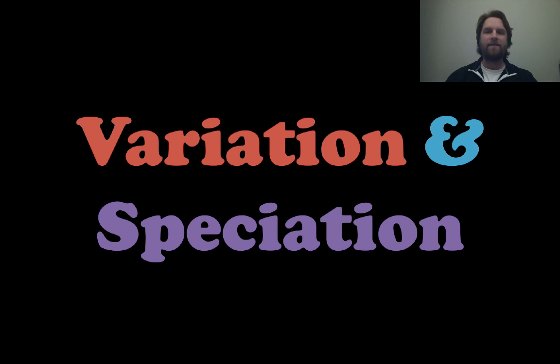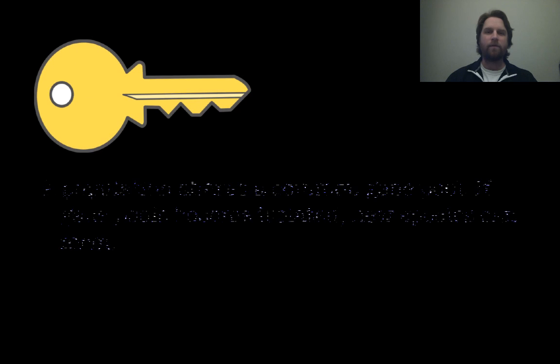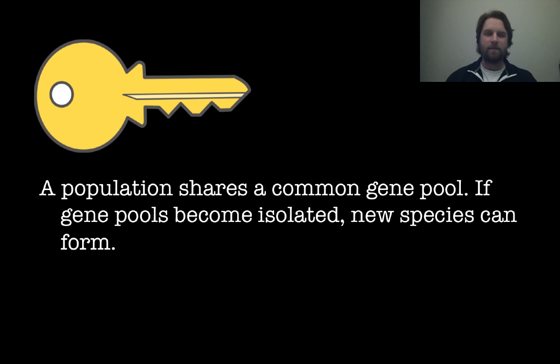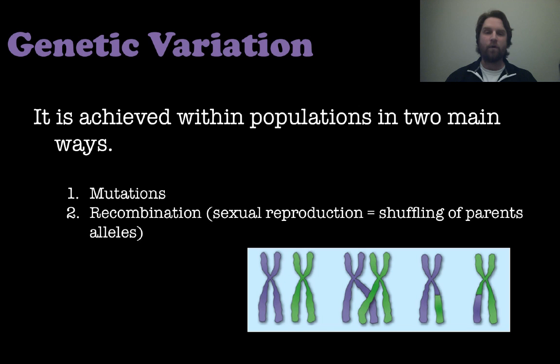Hey everyone, it's Mr. Veve, and this lesson is on variation and speciation. Let's get right into it with our first key concept: a population shares a common gene pool. If gene pools become isolated, new species can form.